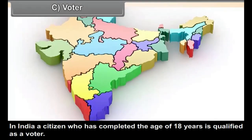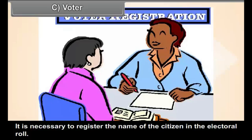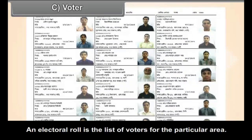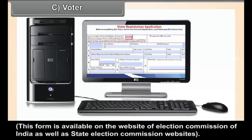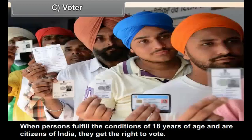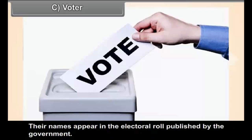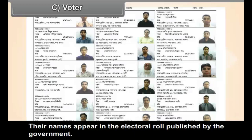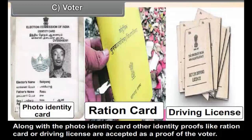Voter: In India, a citizen who has completed the age of 18 years is qualified as a voter. It is necessary to register the name of the citizen in the electoral roll, which is the list of voters for a particular area. Citizens have to fill the form and submit it to the concerned officer. This form is available on the website of Election Commission of India as well as State Election Commission websites. Citizens in India get the Election Photo Identity Card (EPIC), and other identity proofs like ration card or driving license are also accepted as proof of the voter.